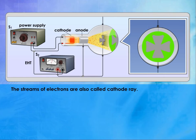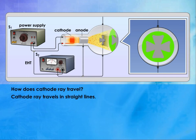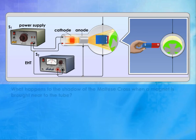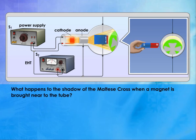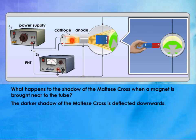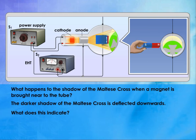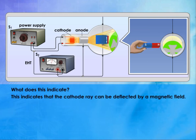The streams of electrons are also called cathode ray. Cathode ray travels in straight lines. What happens to the shadow of the Maltese cross when a magnet is brought near to the tube? The darker shadow of the Maltese cross is deflected downwards. This indicates that the cathode ray can be deflected by a magnetic field.